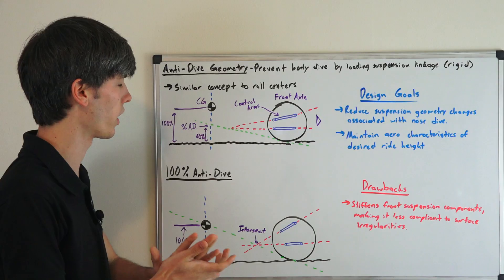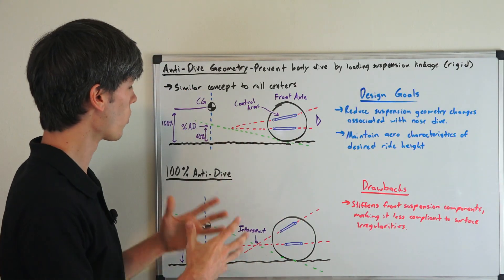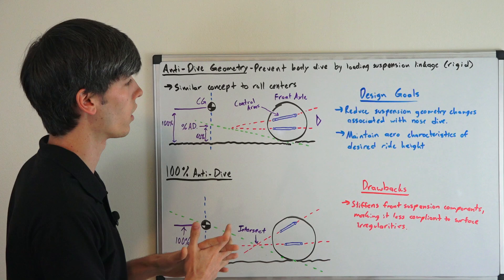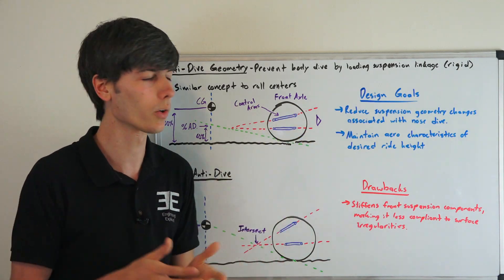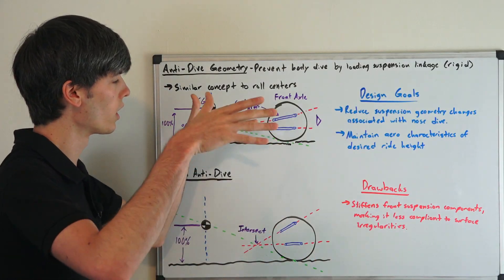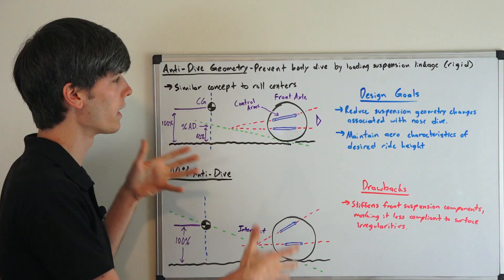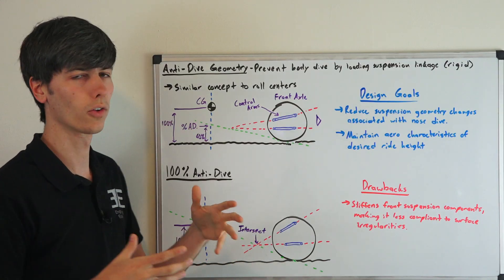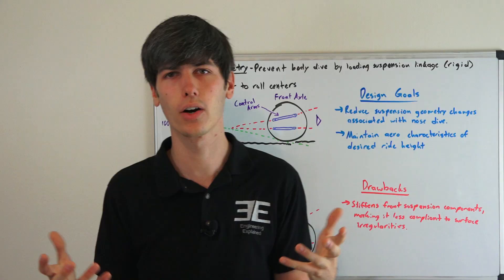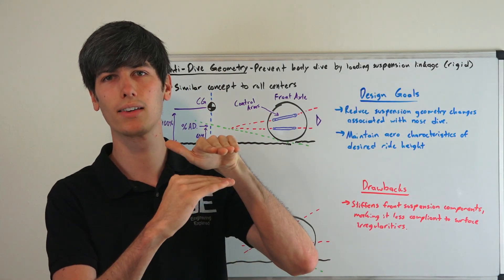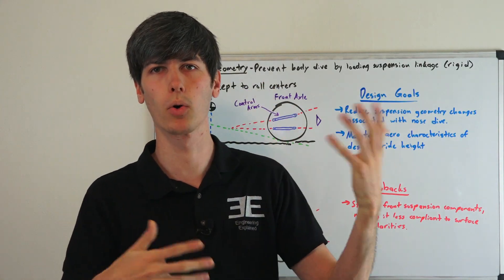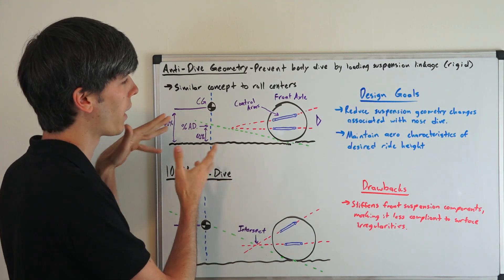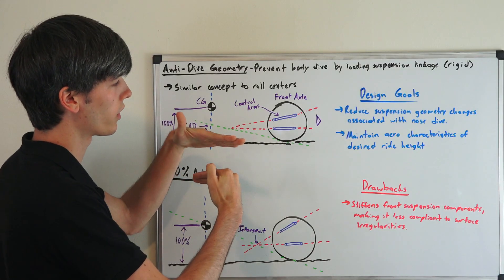There are some negative consequences associated with that, but basically what are your design goals when you're designing something with anti-dive geometry? Essentially what you're trying to do is reduce suspension geometry changes associated with nose dive. When you have a lot of nose dive, you can have an increase in camber, different wheel alignment issues where you won't have as much traction. You also want to maintain aerodynamic characteristics of the vehicle. Typically what you do when you're designing a race car for aerodynamic purposes is maintain a certain ride height. If that ride height changes, your aerodynamics become more or less efficient, typically less efficient. By having this anti-dive geometry, you can prevent changes in the front ride height as well as the rear ride height and the aerodynamic consequences associated with that.